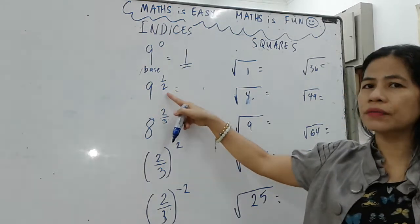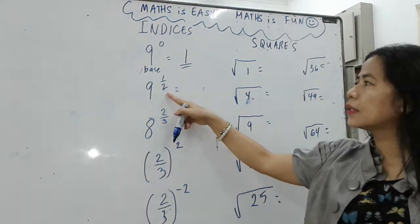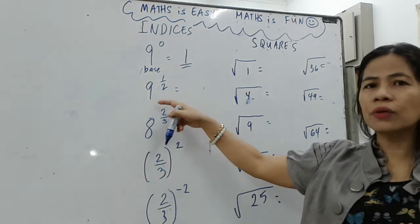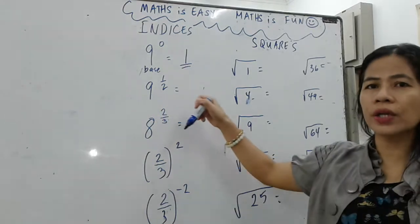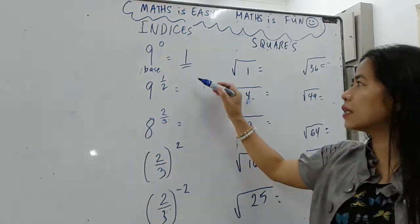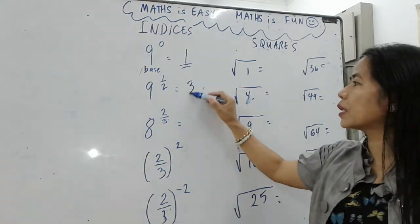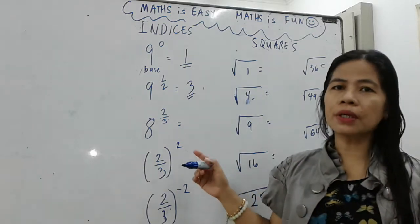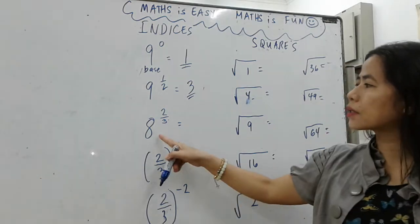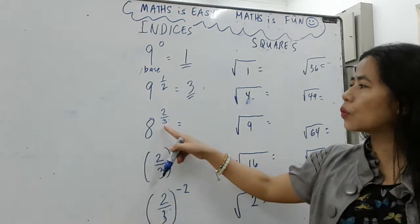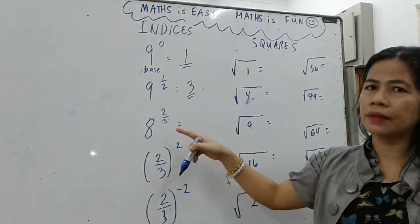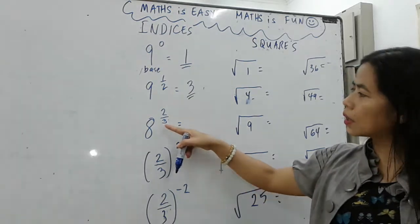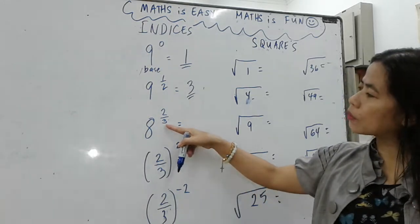it means that we find the square root of nine, and the square root of nine is three. If a number has a power of two over three, we are going to do the denominator first.